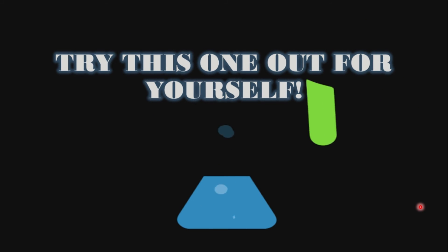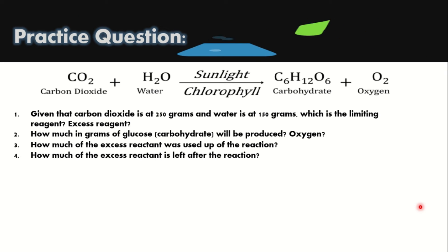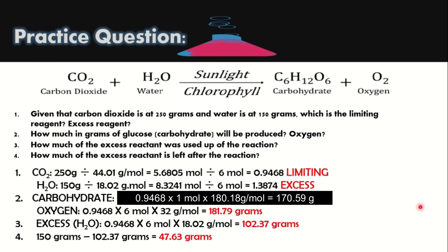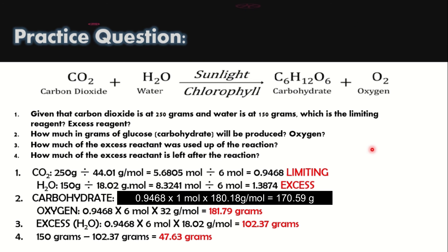So, try this one out for yourself. We have the equation carbon dioxide plus water to produce carbohydrate in the form of glucose plus oxygen. The first step is to always balance the chemical equation, and then you can proceed in answering the following questions. You can pause the video and compute for yourself, then resume the video once you are done to check your own work. You can compare your work to the answers and determine if you answered correctly or on which part you did not answer correctly. Practice makes progress and you learn best by doing things on your own. If you got everything correct, congratulations! You can now proceed to the next topic. If not, you can review our lesson and then try answering again.